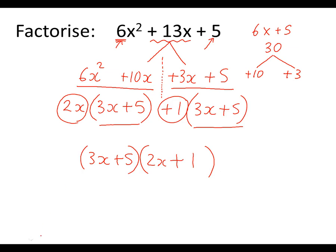So there you go. That is how you factorize an equation into a double bracket when there's a number in front of the x squared using Wright's theorem.